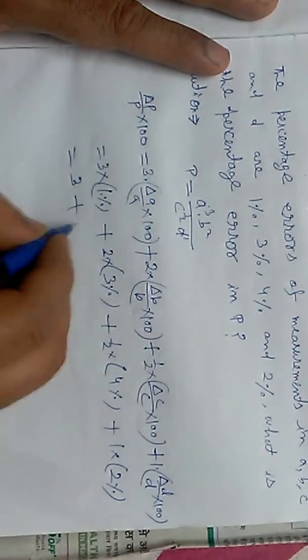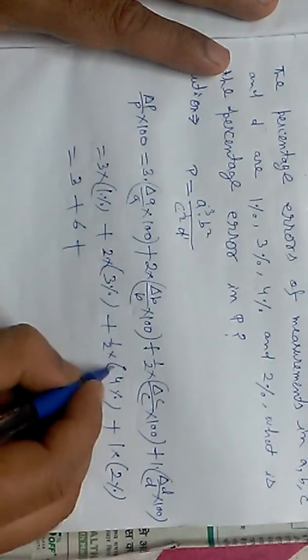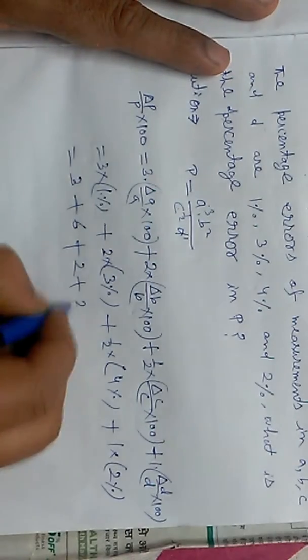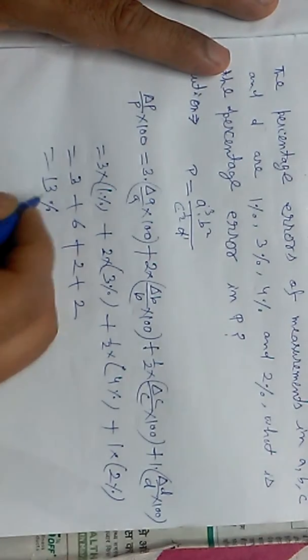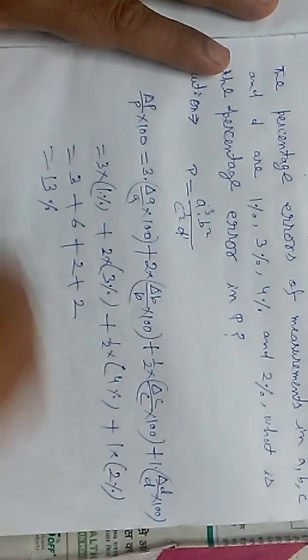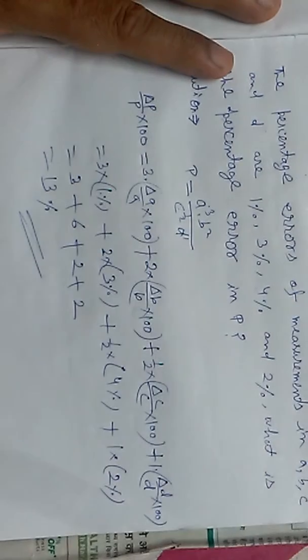This gives us 3 plus 6 plus 2 plus 1, which equals 13%. So the percentage error in P is 13%. Thank you for listening.